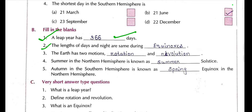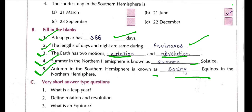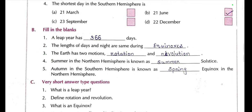The length of a day and night are the same during equinoxes. The Earth has two motions — one is rotation, another is revolution. Summer in the northern hemisphere is known as summer solstice. The autumn in the southern hemisphere is known as spring equinox in the northern hemisphere.